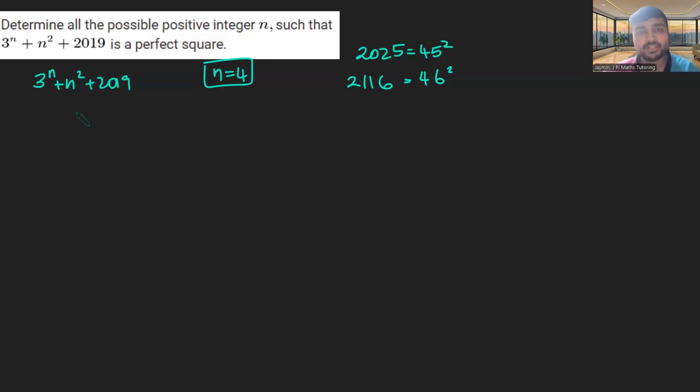What we're going to do is consider this expression at various mods. So we're going to start by looking at this mod 3. If I look at this mod 3, from now on we can assume n is at least 5 because we've already dealt with 1, 2, 3 and 4. If n is at least 5, this thing here is definitely going to be a multiple of 3. That thing there, 2019, is also a multiple of 3 because 2 plus 0 plus 1 plus 9 is 12, which is a multiple of 3.